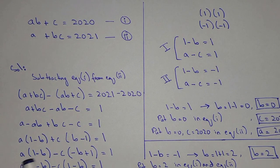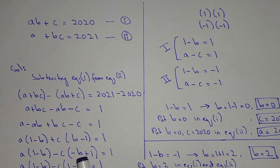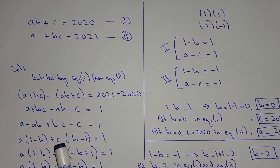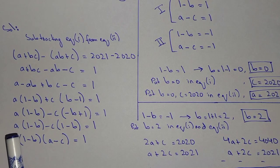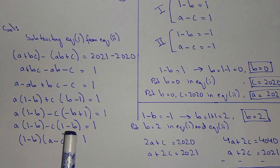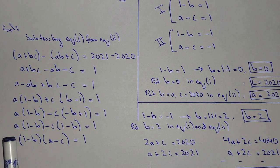We have A times (1 minus B). If we change the sign of C, we get minus C into (1 minus B), because minus C times minus B gives plus BC, which matches. So we adjust to get minus C times (1 minus B), keeping the brackets similar throughout.